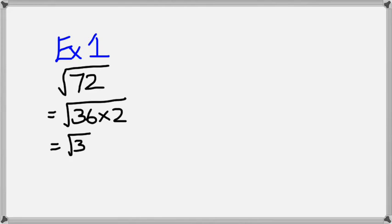Which means you can separate this as square root of 36 multiplied by square root of 2. When you do this, you will get square root of 36, which is 6, and square root of 2 as it is.